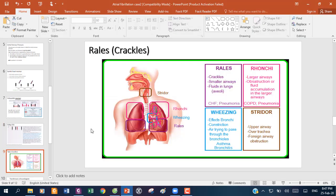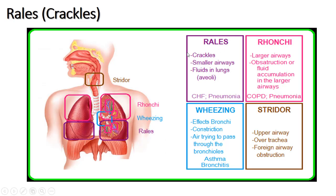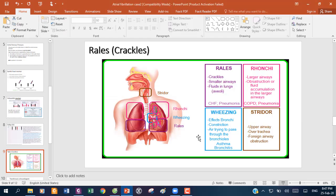Nghe phổi: ca này đề cập đến tiếng crackles (rale). Crackles xuất hiện khi có dịch bên trong phế nang, thường gặp trong suy tim sung huyết và viêm phổi. Đây là một trong 4 loại âm thanh khi nghe phổi, và trong trường hợp này tiếng crackles nghe ở hai bên đáy phổi chỉ ra tình trạng có dịch trong lòng phế nang.